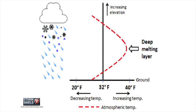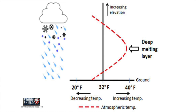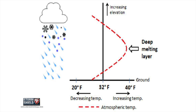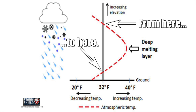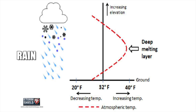For freezing rain to form, atmospheric conditions need to be just right. At the surface, temperatures need to be below freezing. Near the clouds, temperatures are also below freezing, so snow forms. But in between the clouds and the surface, there must be a deep layer with above-freezing temperatures so the snow melts, turning into rain before it can instantly re-freeze into ice.